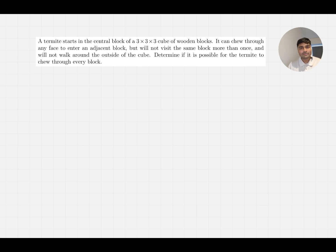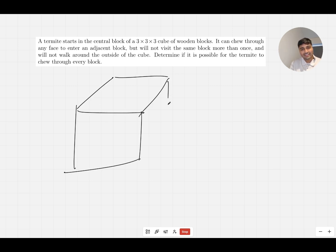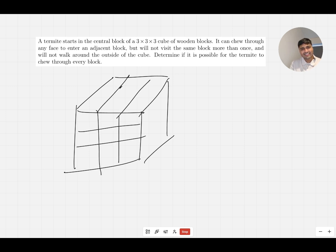I'm going to do this as if I was an interviewee, but I'm going to skip a couple of steps because it kind of depends on who you are as a student, whether you would spot the things that I spot. Let's imagine this question has just been read out to me by the interviewer. So just to clarify, we've got a termite living in essentially a Rubik's cube kind of thing — a three by three cube. I'll try my best to draw it out here.